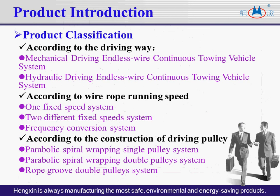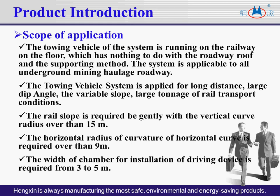The endless wire continuous towing vehicle system can be divided into mechanical driving system and hydraulic driving system according to driving method. According to roadway running speed, it can be divided into one fixed speed system, two different fixed speed systems, and a frequency conversion system. According to the construction of the driving pulley, it can be divided into parabolic spiral wrapping single pulley system, parabolic spiral wrapping double pulley system, and rope groove double pulley system. The system runs on the railway floor, independent of the roadway roof and supporting method, making it applicable to all underground mining haulage roadways.